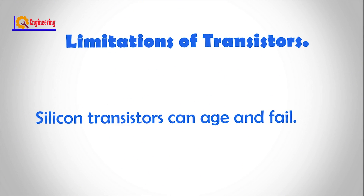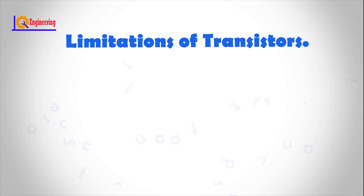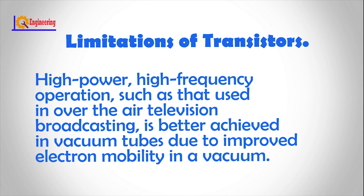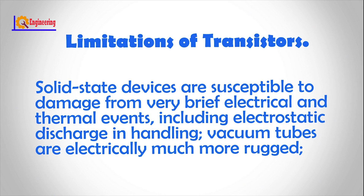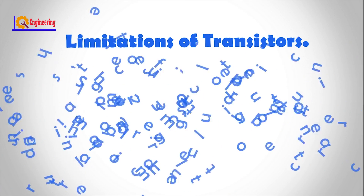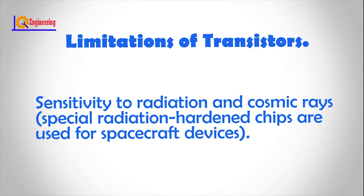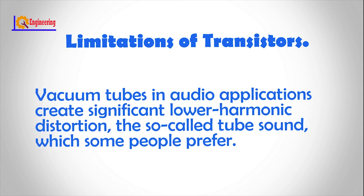Limitations of Transistors: Silicon transistors can age and fail. High power, high frequency operation, such as that used in over-the-air television broadcasting, is better achieved with vacuum tubes due to improved electron mobility in a vacuum. Solid state devices are susceptible to damage from very brief electrical and thermal events, including electrostatic discharge in handling. Vacuum tubes are electrically much more rugged. Sensitivity to radiation and cosmic rays means special radiation-hardened chips are used for spacecraft devices. Vacuum tubes in audio applications create significantly lower harmonic distortion — the so-called tube sound — which some people prefer.